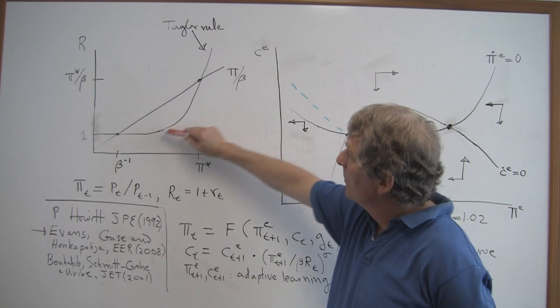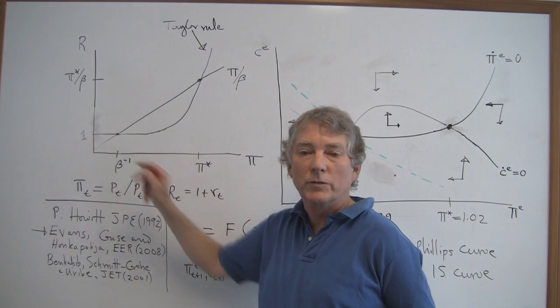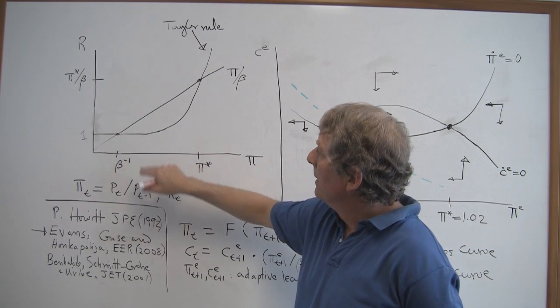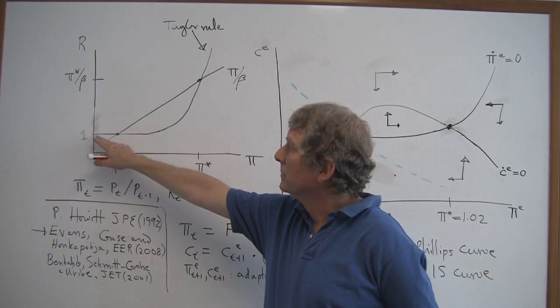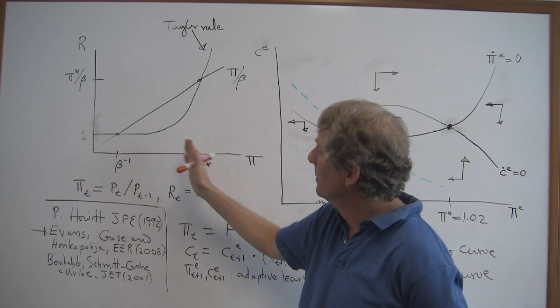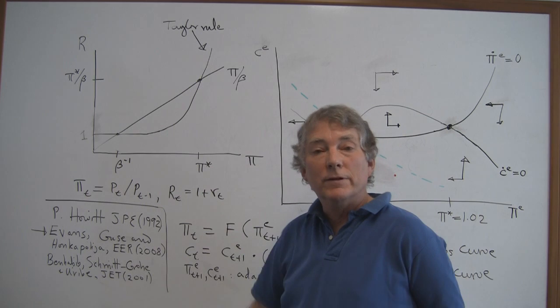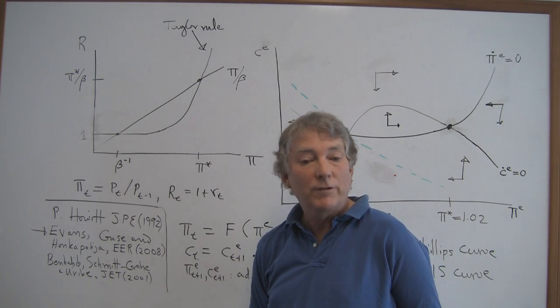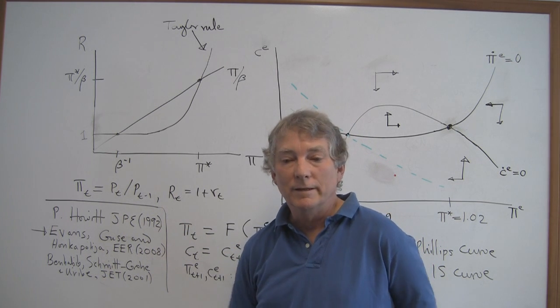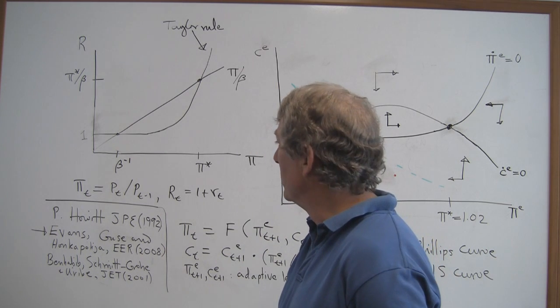And what Benhabib, Schmitt-Grohé, and Uribe really pointed out was that because of the zero interest lower bound, and here that corresponds to R equals 1, there's got to be another steady state, and that would be at whatever the minimum interest rate is that policymakers choose. Here I've represented it as 1 below some threshold inflation level. And at beta inverse, which corresponds to a deflation rate of whatever beta inverse is, it'll be 1% if beta is approximately 0.99.